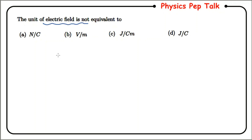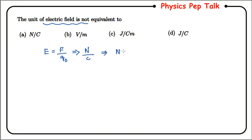Let us first write the units of electrical field. We know that electrical field is defined to be force per unit charge. From this I can write the unit of electrical field as force, which is Newton, divided by charge in Coulombs.